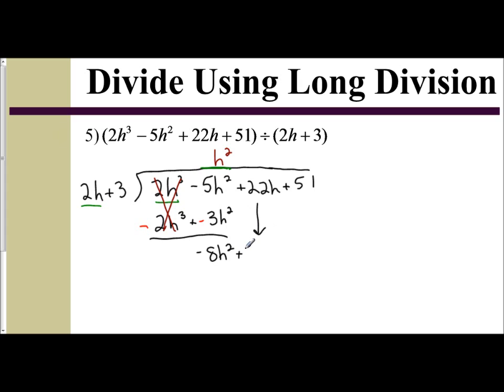And again, look at your first term. What do you multiply your 2h by to get negative 8h squared? And that's going to be a negative 4h. So distribute: negative 4h times 2h is negative 8h squared, and negative 4h times 3 is a negative 12h. You want to subtract those terms, so let's change their signs to the opposite. So the negative 8h squared becomes a positive, the negative 12h becomes a positive. And so the first term will cancel, and you have 22h plus 12h, which is 34h. Now let's drop down our 51.